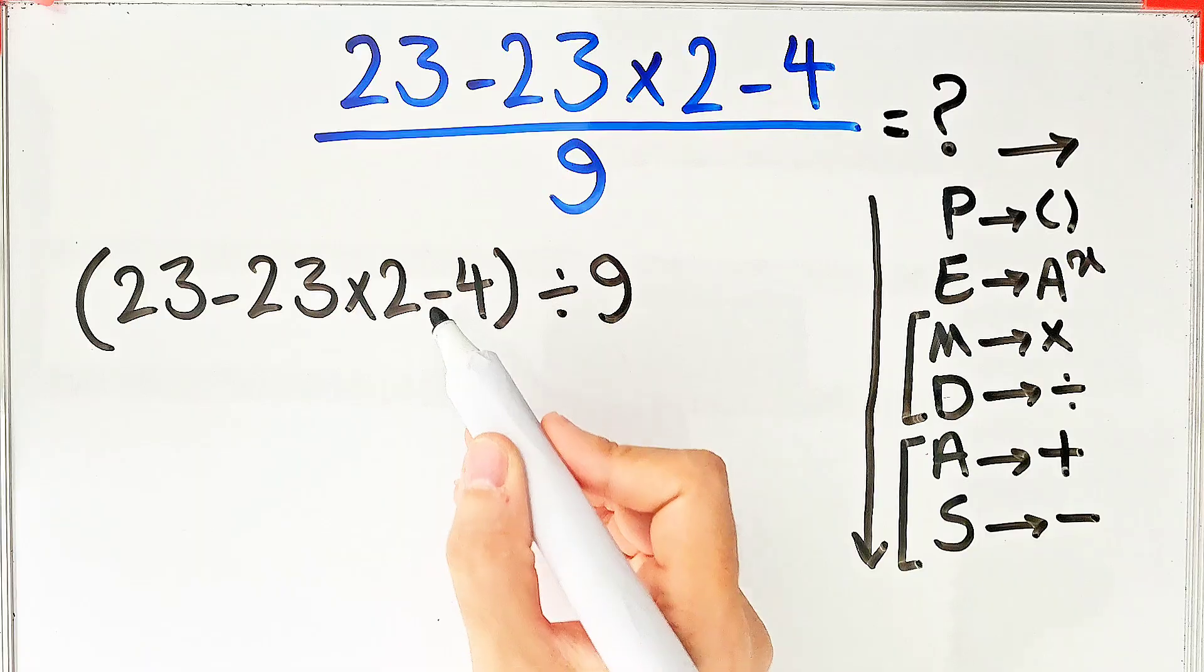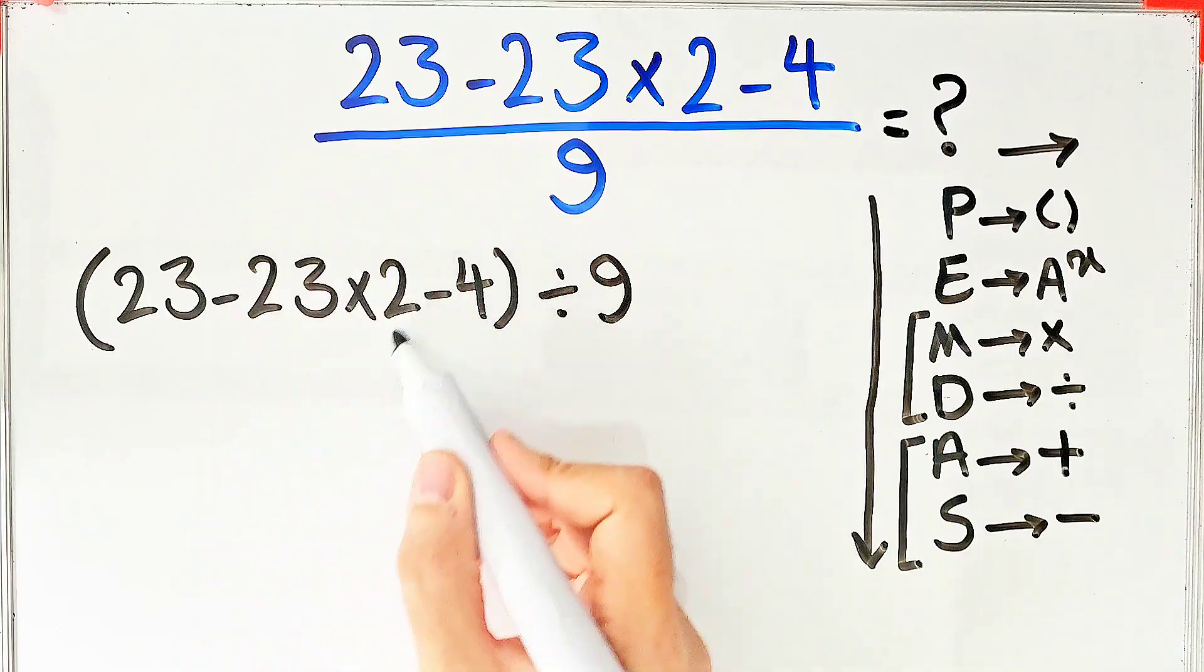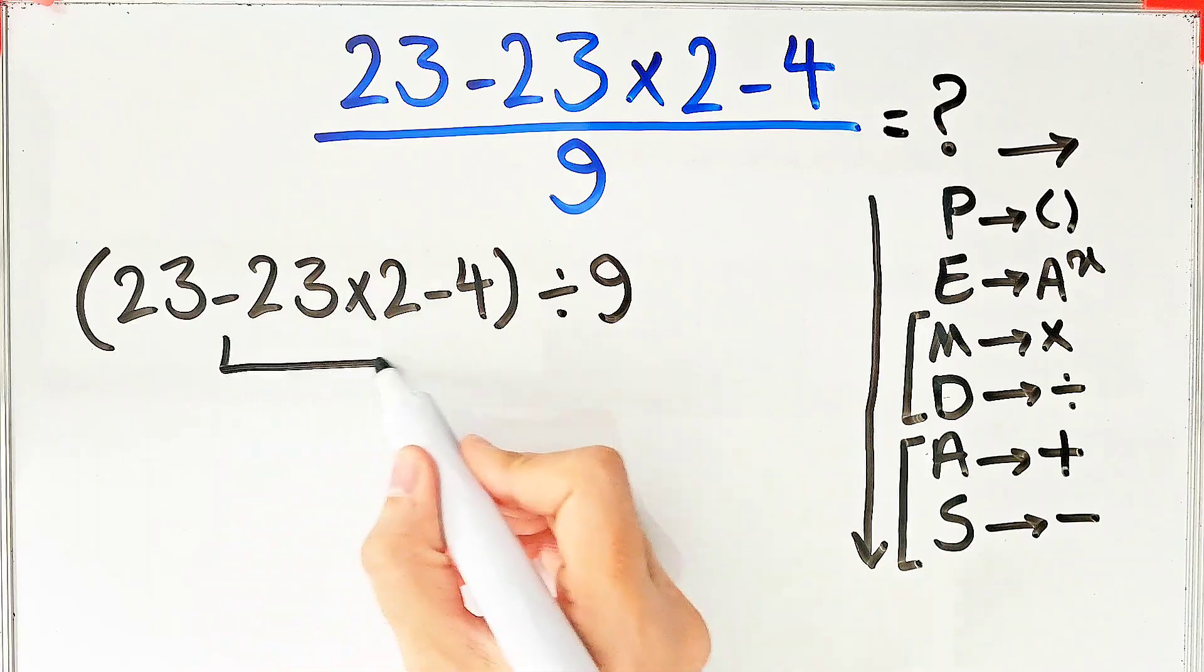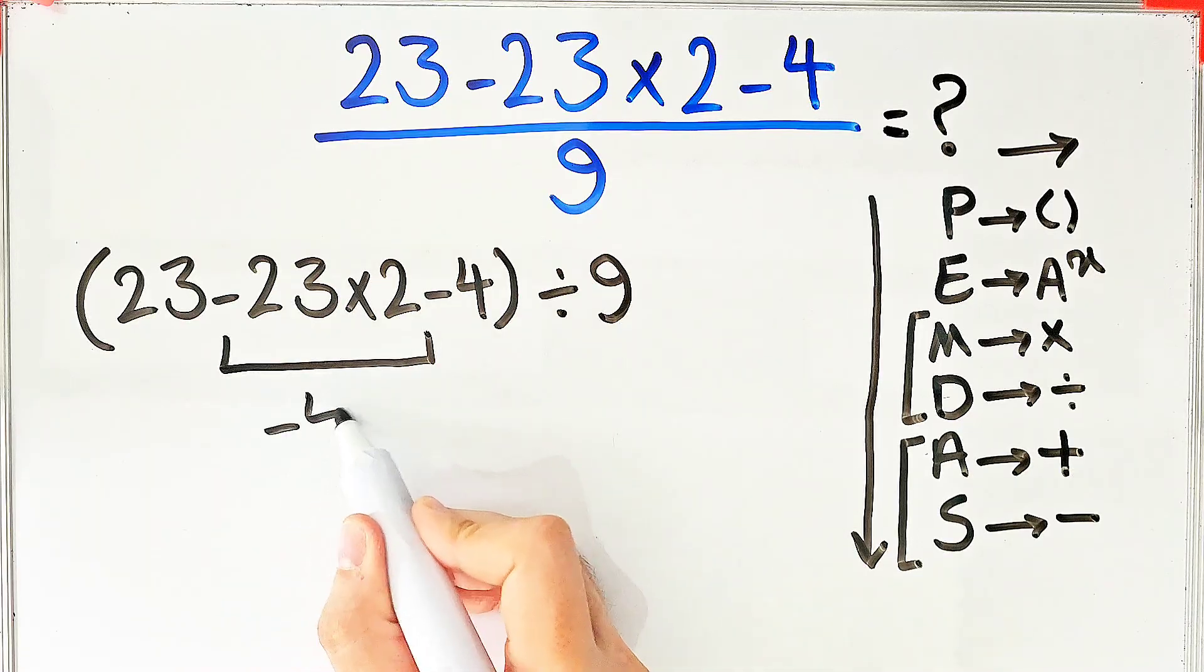First we simplify the multiplication because the multiplication has higher priority than subtraction. Negative 23 times 2 equals negative 46.